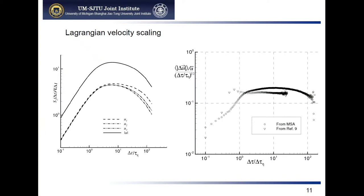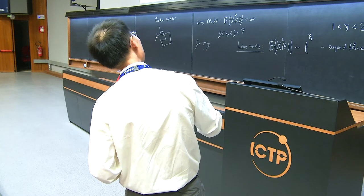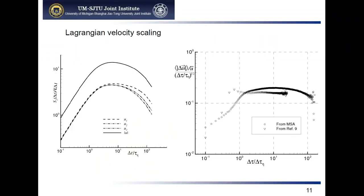Now, using our new method, the scaling relation is very clear. Checking against dimensional analysis predictions, we get very good agreement. In the inertial regime it is very clean. So this is a completely different result compared to using the classical structure function.